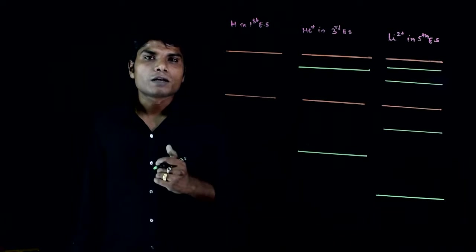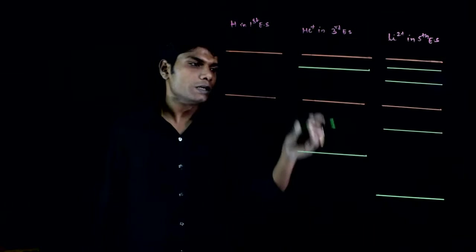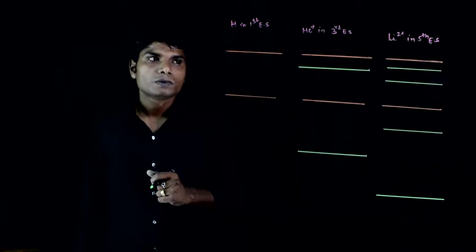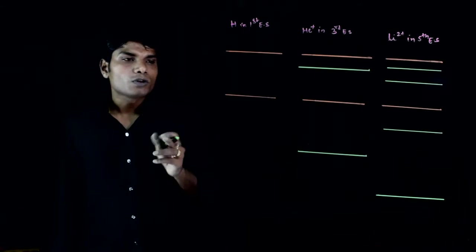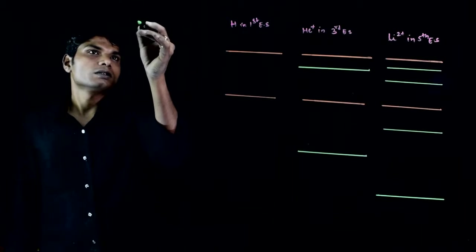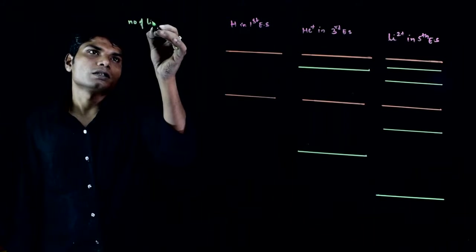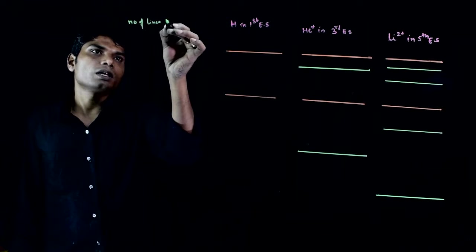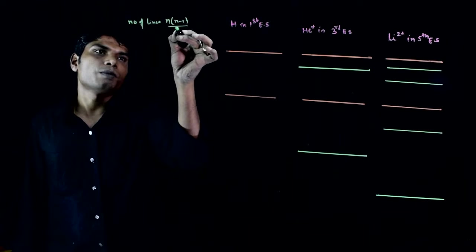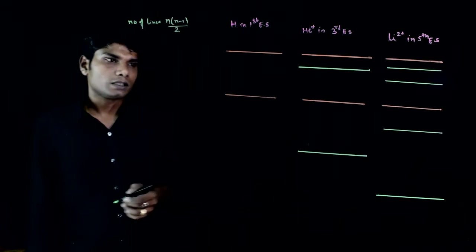To find the total number of emission lines, we calculate how many lines hydrogen will emit, then helium plus, then lithium 2 plus. There is a formula we know for the number of spectrum lines: number of lines = n(n−1)/2.